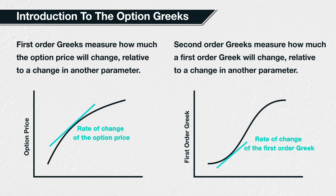First-order Greeks are partial derivatives of the option price with respect to the parameter in question — they measure the sensitivity of the option price to various parameters. For example, the Greek delta is a partial derivative of the option price with respect to the underlying price. That is, it measures the sensitivity of the theoretical option price to changes in the underlying price.